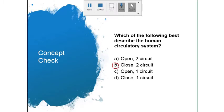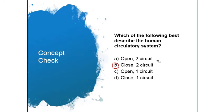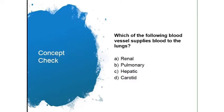Closed means within the blood vessel, two circuits. We drew that out earlier — it goes to the lungs, returns to the heart, and then goes to the body. Which of the following blood vessels supplies blood to the lungs? That would be the pulmonary. Renal is to the kidneys, hepatic is to the liver, and carotid is to the head.